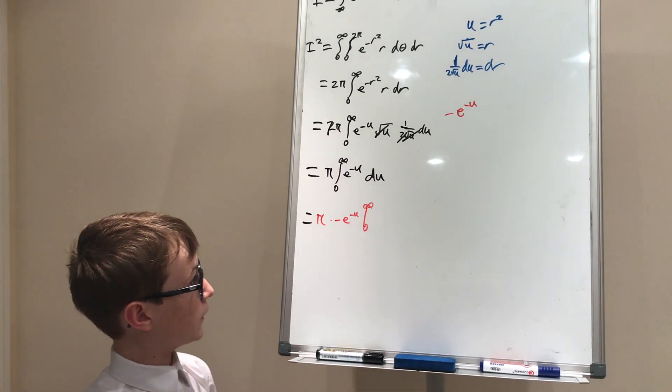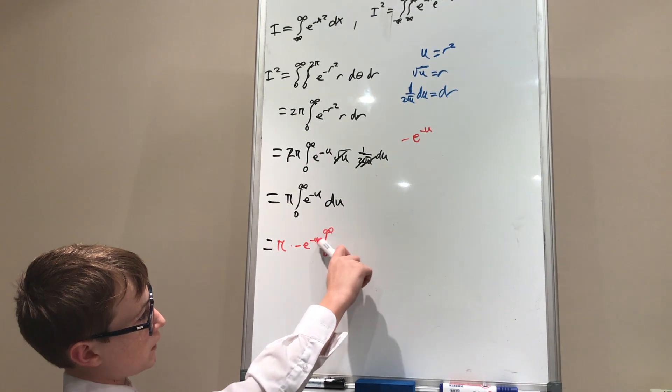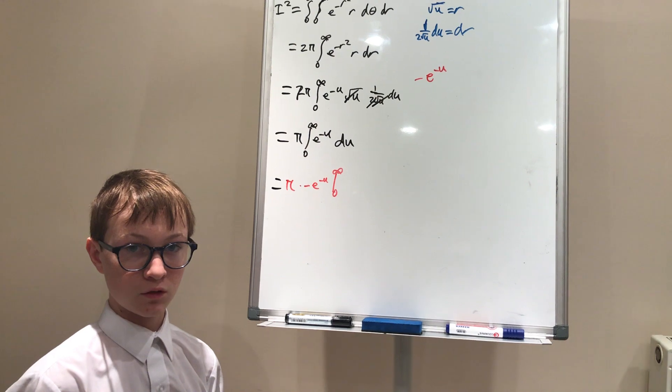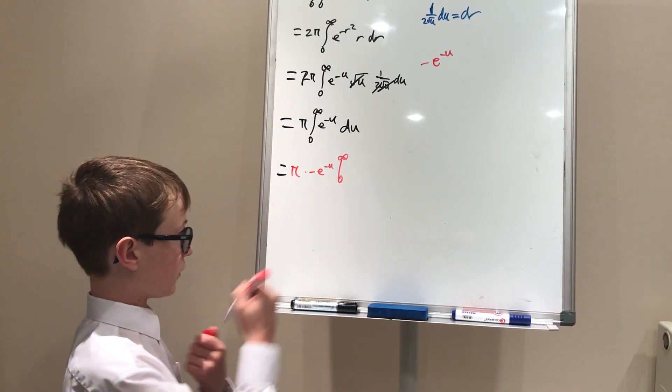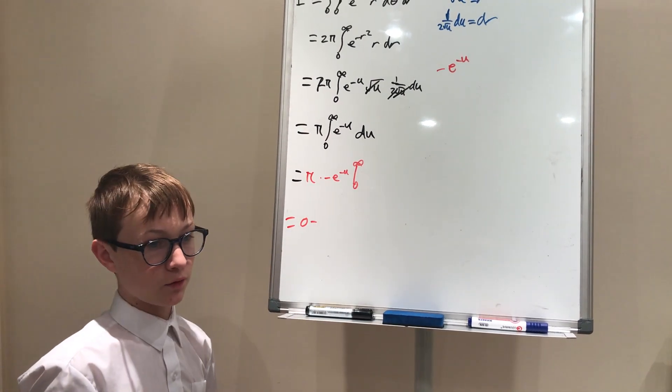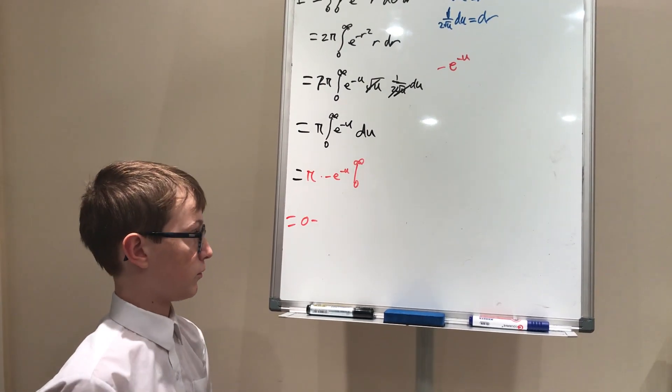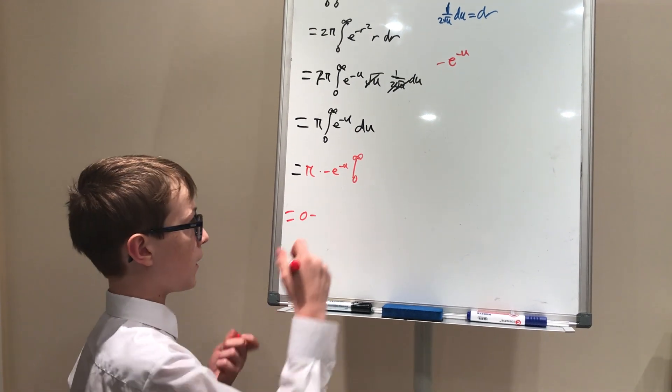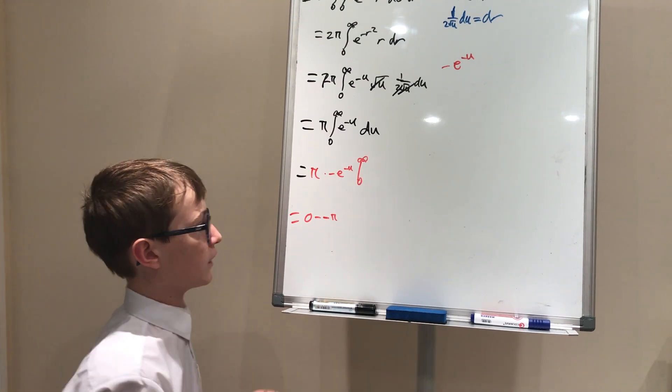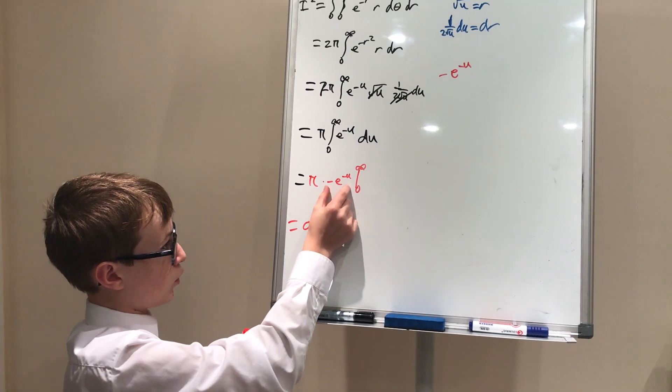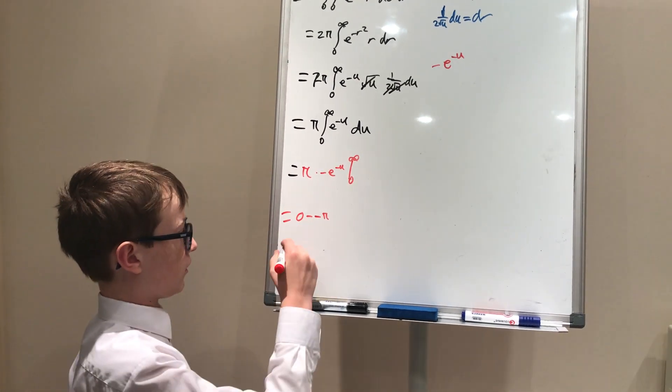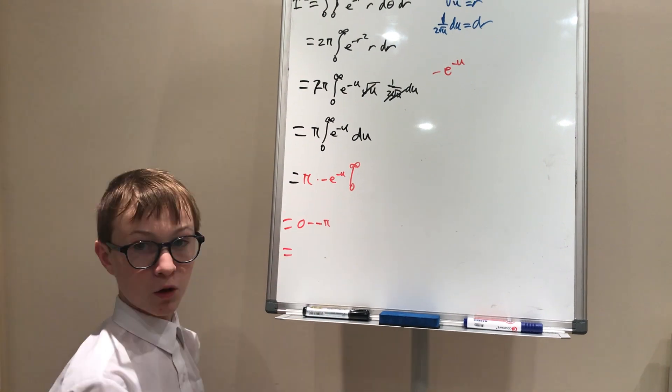So first we plug in infinity. If we plug in infinity into our u, well, anything to the power of negative infinity just goes down straight to zero. So this equals zero minus if we plug in zero, e to the power of zero or negative zero, it doesn't really matter, it's just one. So minus minus pi, because this part is just going to be negative one and then times pi. So negative pi. These two minuses become a plus. So zero plus pi is just pi.